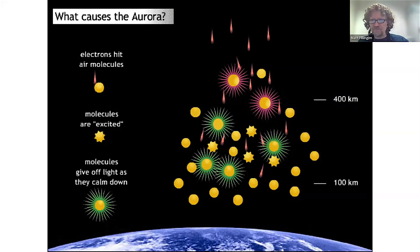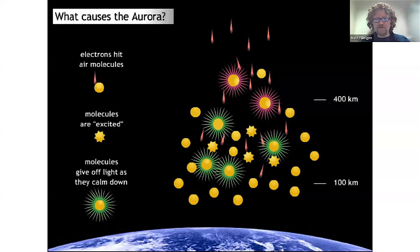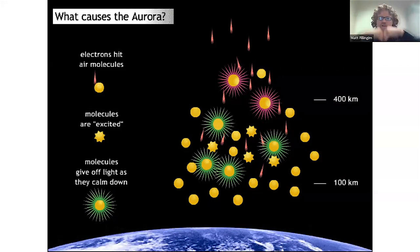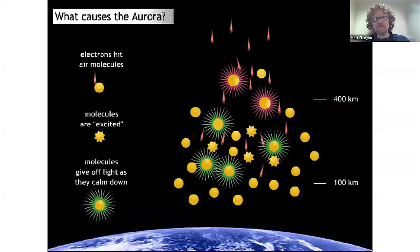A lot of the pictures I showed had green light coming from the atmosphere. That predominantly comes from oxygen. Our atmosphere is mostly nitrogen, but also has a lot of oxygen. As you go higher up in the atmosphere, you get a more relative fraction of oxygen. These electrons from space hit a lot of oxygen, and when you excite oxygen, one of the colors it emits is green. Sometimes it emits some red colors too, but predominantly green. So we see this nice green aurora here on Earth.